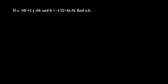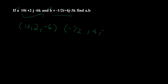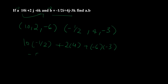We're given vector a = (10, 2, -6) and vector b = (-1/2, 4, -3). There has to be an arrow above them because these are vectors. We compute the dot product: 10 times -1/2 plus 2 times 4 plus -6 times -3, which is -5 plus 8 plus 18, giving us 21. This is our vector a dot b.